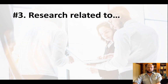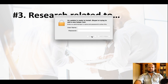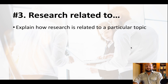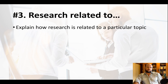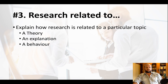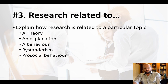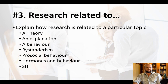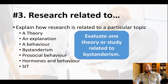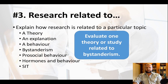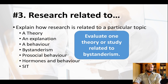Research related to a particular topic is a bit of a cheat type of question. What you are doing is explaining how the research is related to a particular topic. This is usually in topics where the core concept is not very well defined in the guide. It could be a behavior like bystanderism or pro-social behavior, a hormones and behavior explanation, or a theory like social identity theory. You might be asked to evaluate one theory or study related to bystanderism. These questions come up when there is just a one-word heading in the guide and it is not clear what you need to understand about that concept.